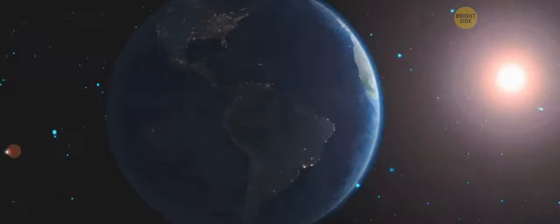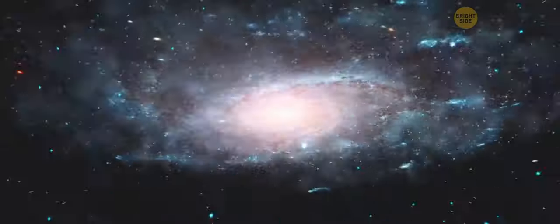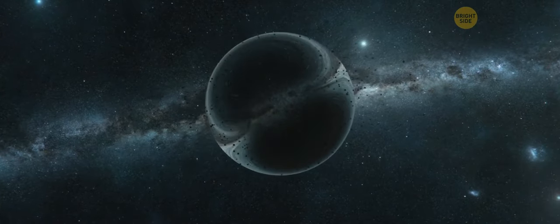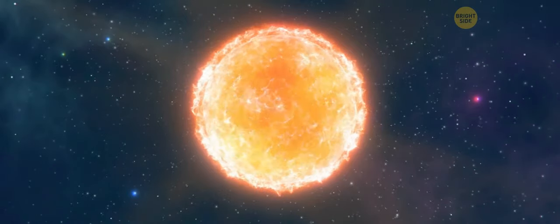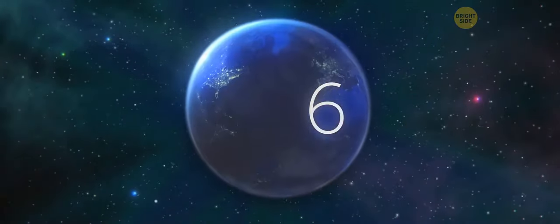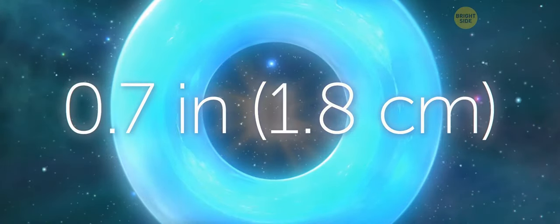We won't feel this difference, but the entire universe around us will develop faster relative to us. Any object can become a black hole if it's compressed to a certain size. For example, the Sun can become one if it's shrunk to a width of 3.7 miles. And even the Earth, if you squeeze it to a width of 0.7 inches, it becomes a black hole.